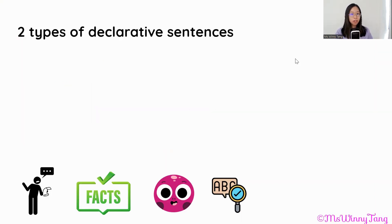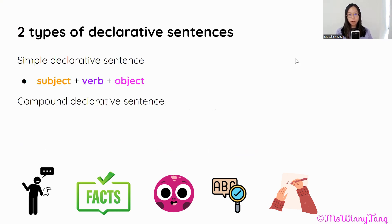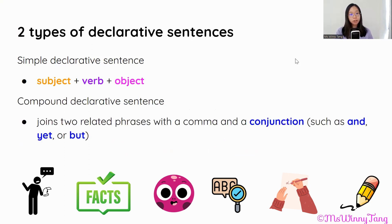There are two types of declarative sentences. There is a simple declarative sentence where we have the subject, verb and object. There is a compound declarative sentence where we join two related phrases with a comma and a conjunction — such as and, yet or but.